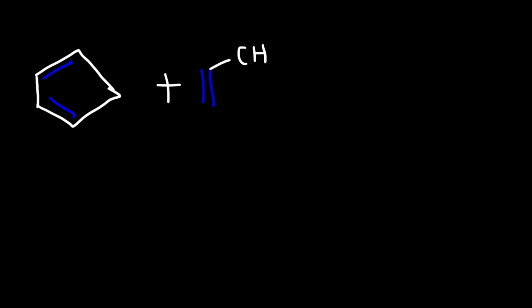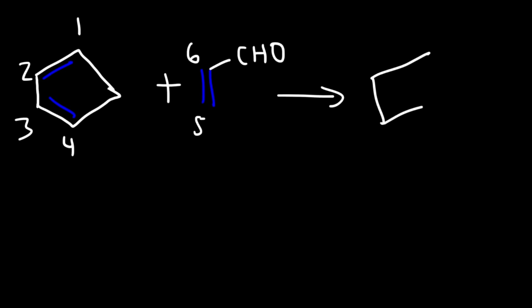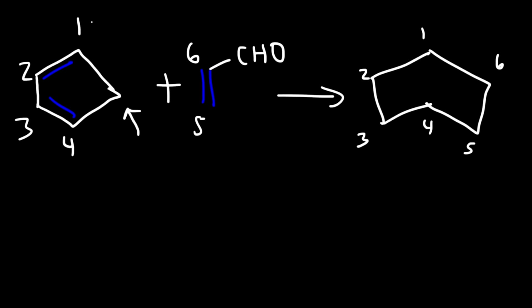Now what should you do if you have a diene that is already inside of a ring? Here we have cyclopentadiene and we're going to react it with a dienophile that has an aldehyde functional group. If you have a diene that's part of a ring and it undergoes the Diels-Alder reaction, you get another ring and therefore a bicyclic compound. The six-membered ring is labeled carbons one through six, and there is a methylene (CH2) group attached to carbons one and four.